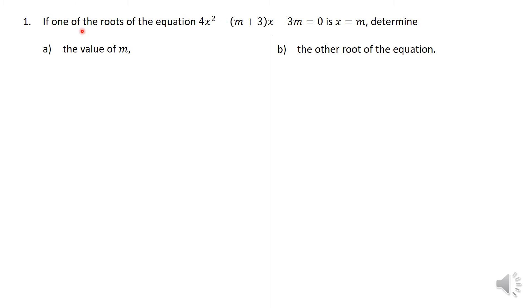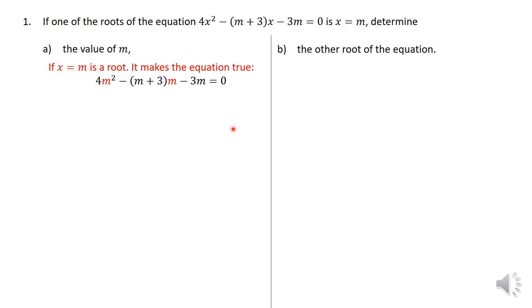So the first question — as I said, you are told that one of the roots of this equation is m. So everywhere you have an x, you are going to replace that x with m. And once you do that, you just clean it up. You must be a bit careful here with your algebra — don't just multiply that m without recognizing that the negative is also going to multiply.